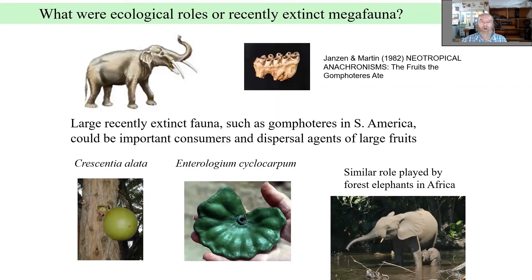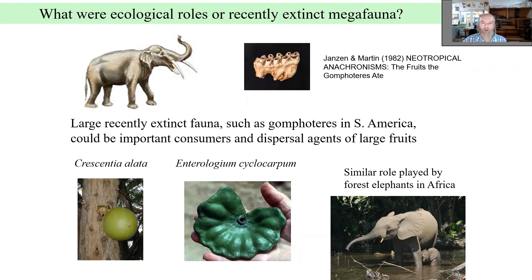The loss of megafauna has cascading effects on other parts of the ecosystem. Plants with large fruits specially adapted to megafauna — for instance, gomphotheres among the extinct South American mammals — now face difficulties reproducing because there is nobody to disperse their seeds. This role is very conspicuous in forest elephants in Africa, which are unfortunately still surviving. With this, we have finished the phylogenetic considerations for herbivory.